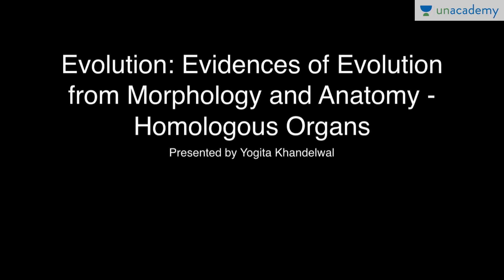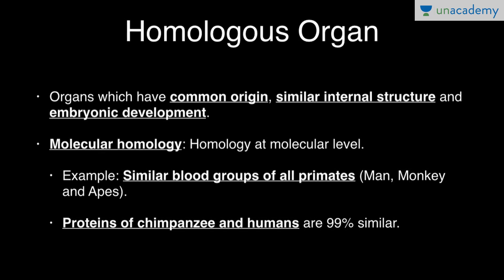Hey guys, in this lesson we will talk about evolution — specifically evidences of evolution from morphology and anatomy, presented by Yogata Khandilwal. We have two evidences of evolution on the basis of morphology and anatomy: first is homologous organ and the other is analogous organ. In this lesson we will deal with homologous organs.